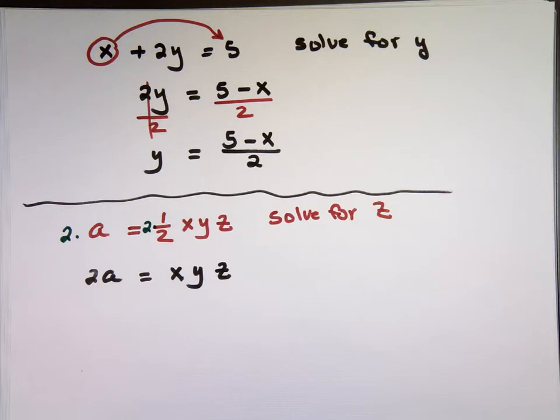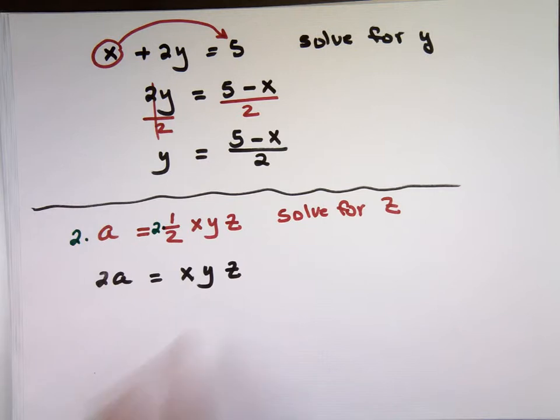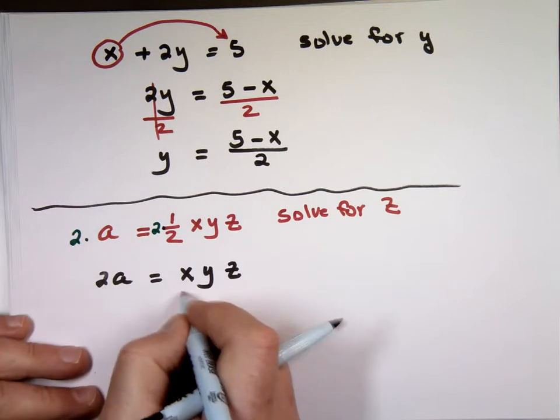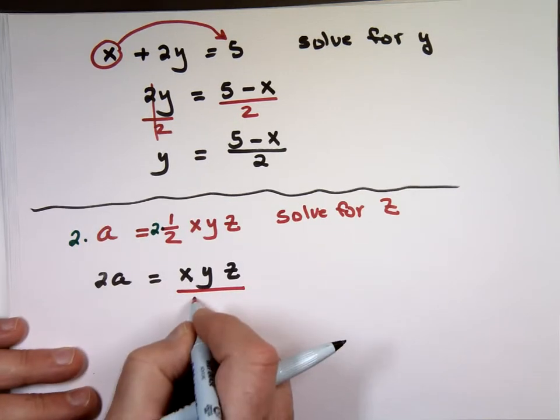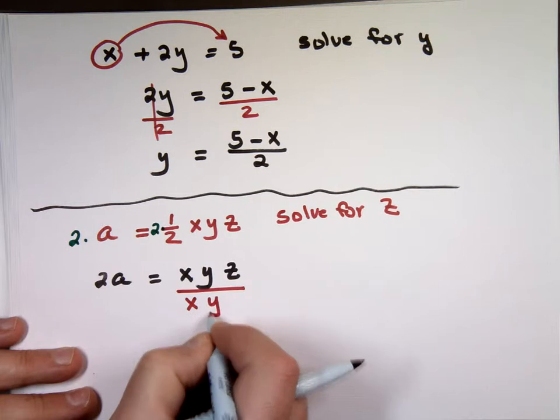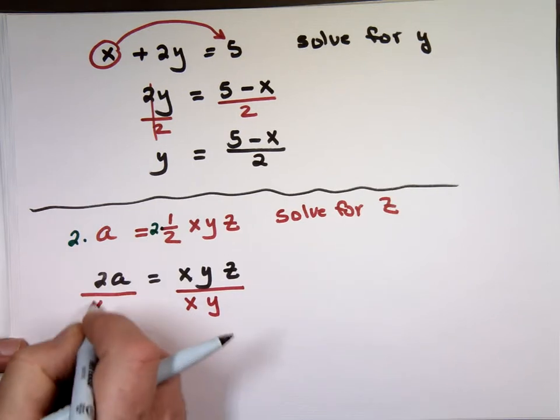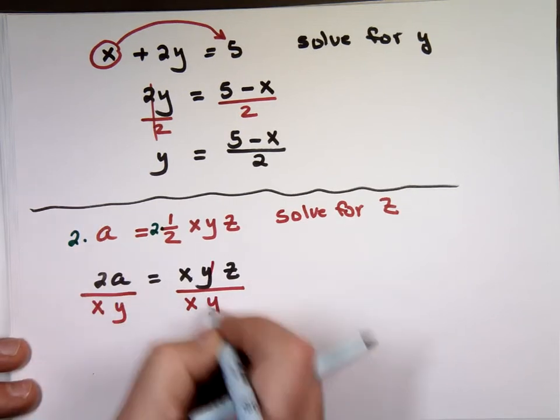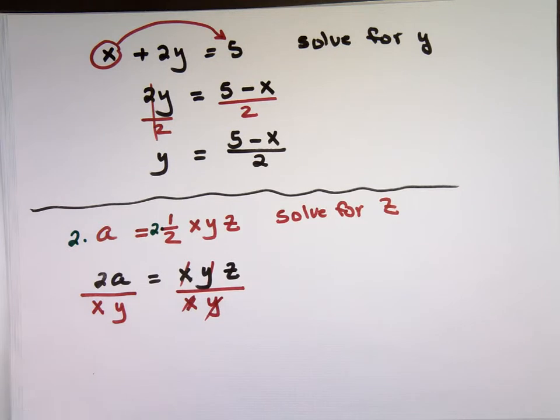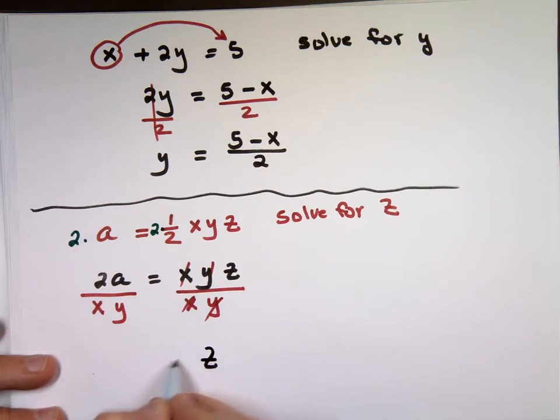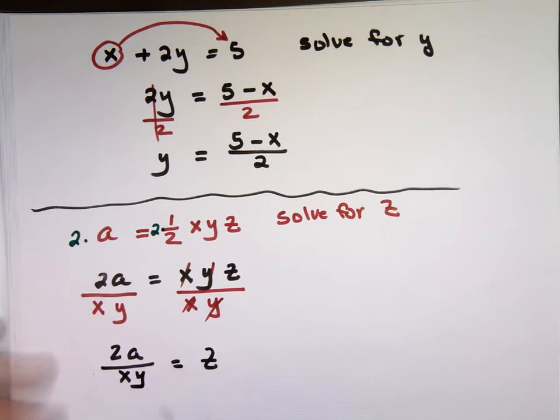Now I'm looking for Z. This is a multiplication. I'm going to divide this side by everything but Z, which means what? X times Y. 2A over XY.